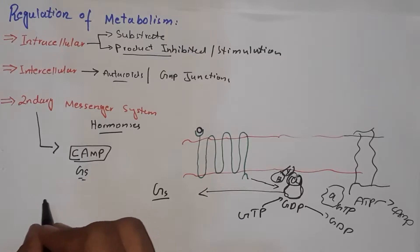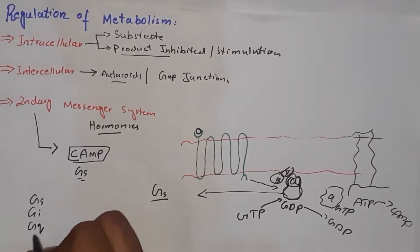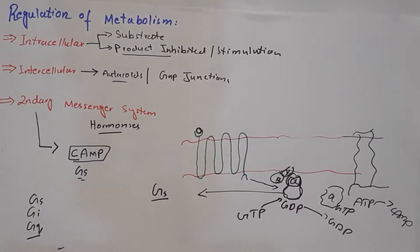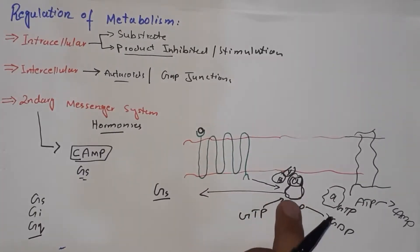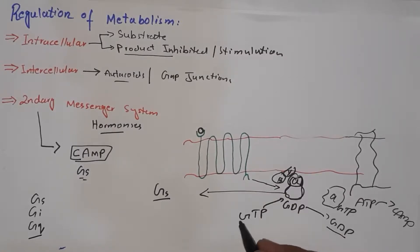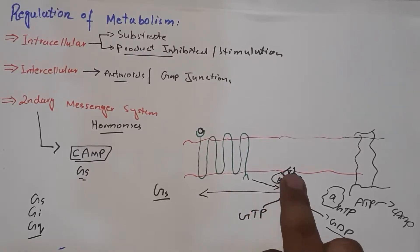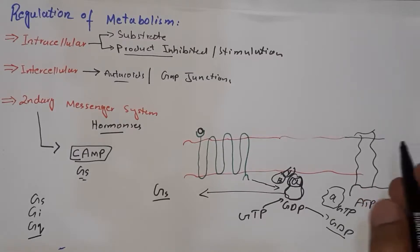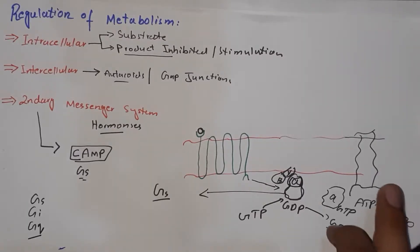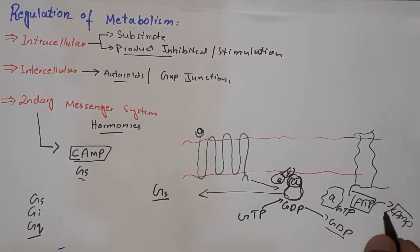G proteins are of three kinds: GS, GI, and GQ, all having different effects. When a hormone binds and activates the GS protein, the alpha subunit releases GDP and binds to GTP, then dissociates from the beta and gamma subunits and goes to activate adenylyl cyclase. When adenylyl cyclase gets activated, it catalyzes the conversion of ATP into cyclic AMP.